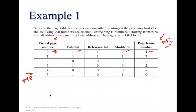However, virtual page number 2 has an invalid bit, so it is not accessible and has no corresponding frame number. When we extract virtual page number 2 from a virtual address, there is no corresponding page frame number. Similarly, virtual page number 4 will generate a page fault because there is no corresponding page frame number in main memory.